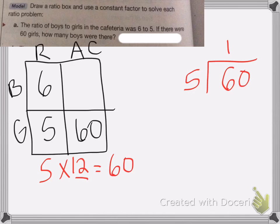So 5 goes into 6 once. That's 5. Subtract, bring down the zero. 5 goes into 10 twice. That means I can multiply my 6 by 12 to figure out what the actual count of the boys is.